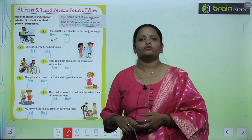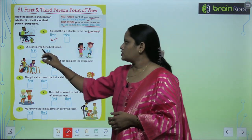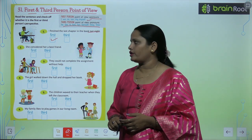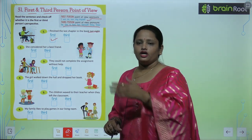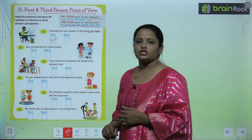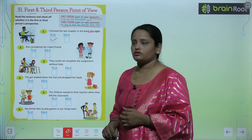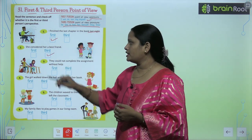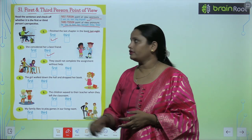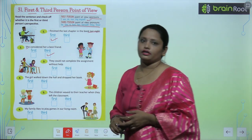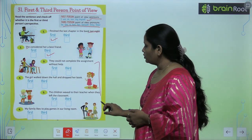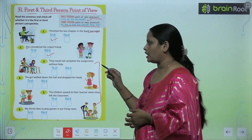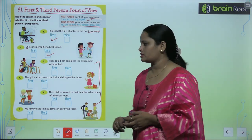तो किसने finish किया? 'I' means मैं — तो यह first person है। Next sentence: 'She considered her our best friend.' उसने उसे अपना best friend बताया है। किसने बताया? मैंने नहीं — यहाँ पे 'she' है, जो third person है। Similarly, find out which person is being talked about — either first or third. I hope you have understood this.